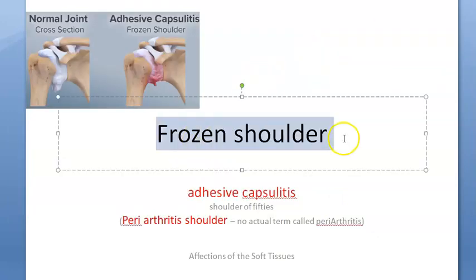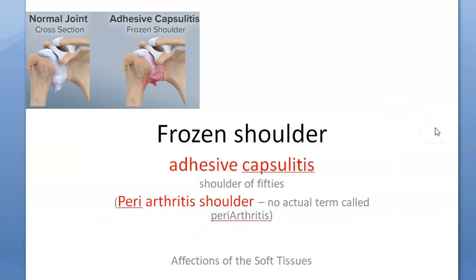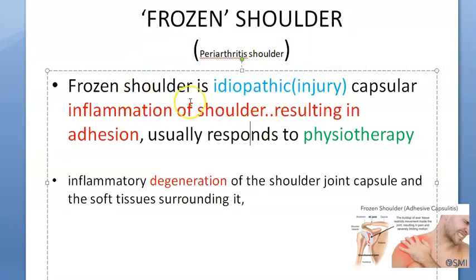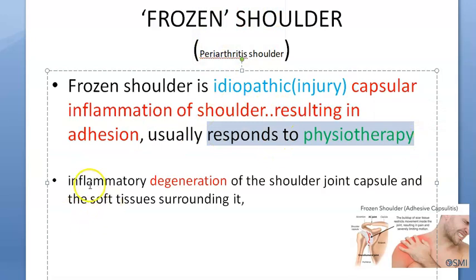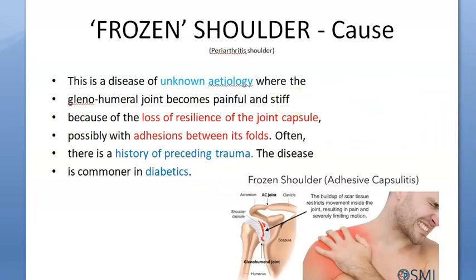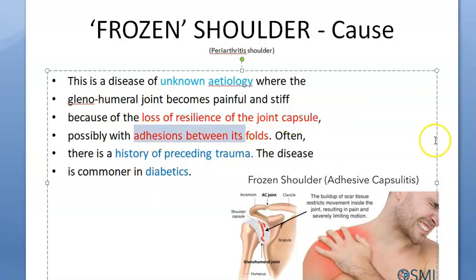Recap: Frozen shoulder, also called adhesive capsulitis, is also known as periarthritis shoulder - though that term should not be used. This is a soft tissue problem, not a bone problem. The cause is idiopathic or injury to the joint capsule, leading to inflammation and capsular inflammation of the shoulder resulting in adhesion. It usually responds to physiotherapy. The inflammation causes degeneration of the capsule and surrounding soft tissue. Cause is usually unknown but there could be a history of preceding trauma, and it is more common in diabetics.